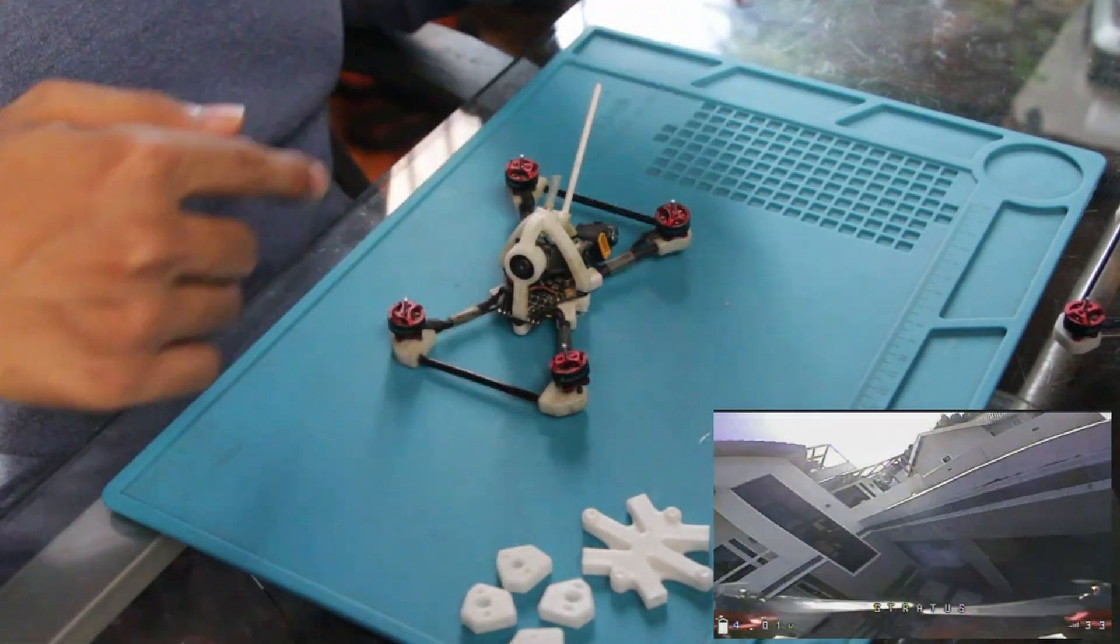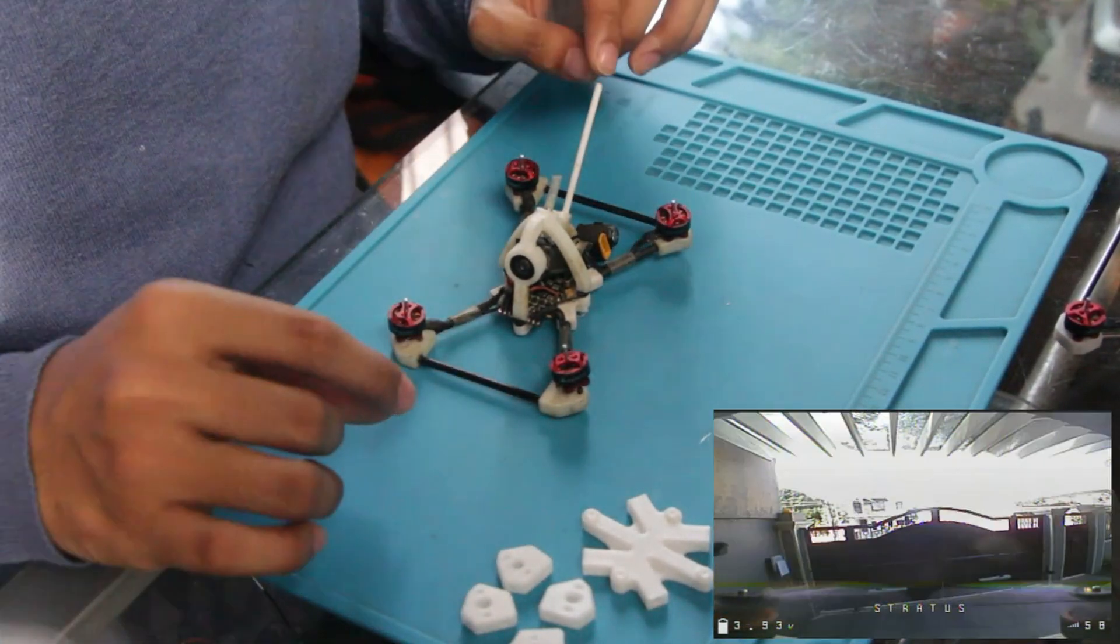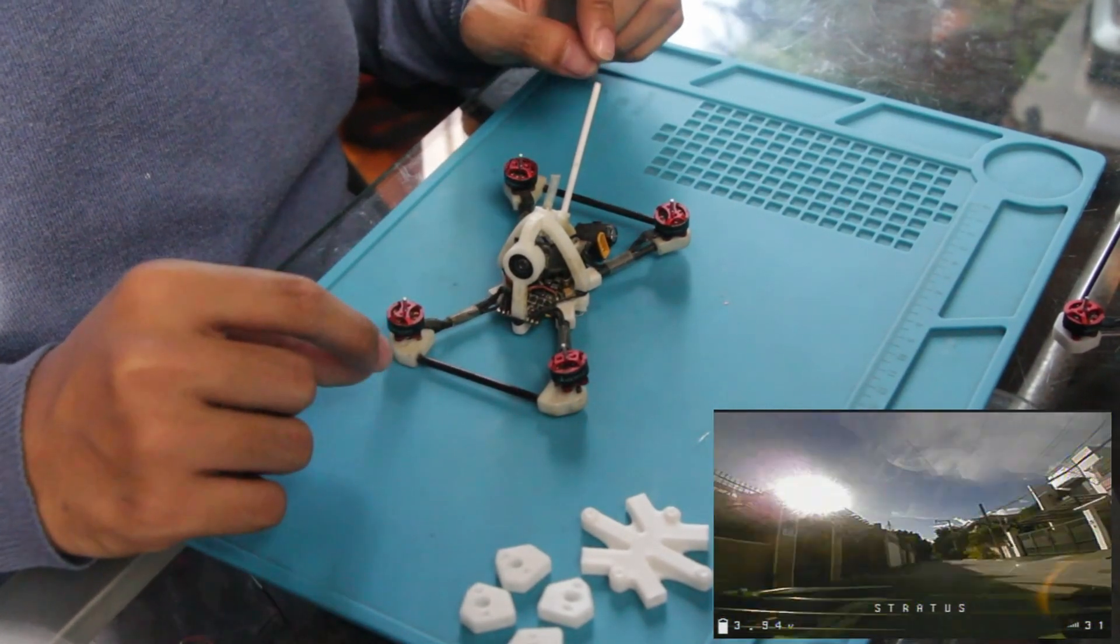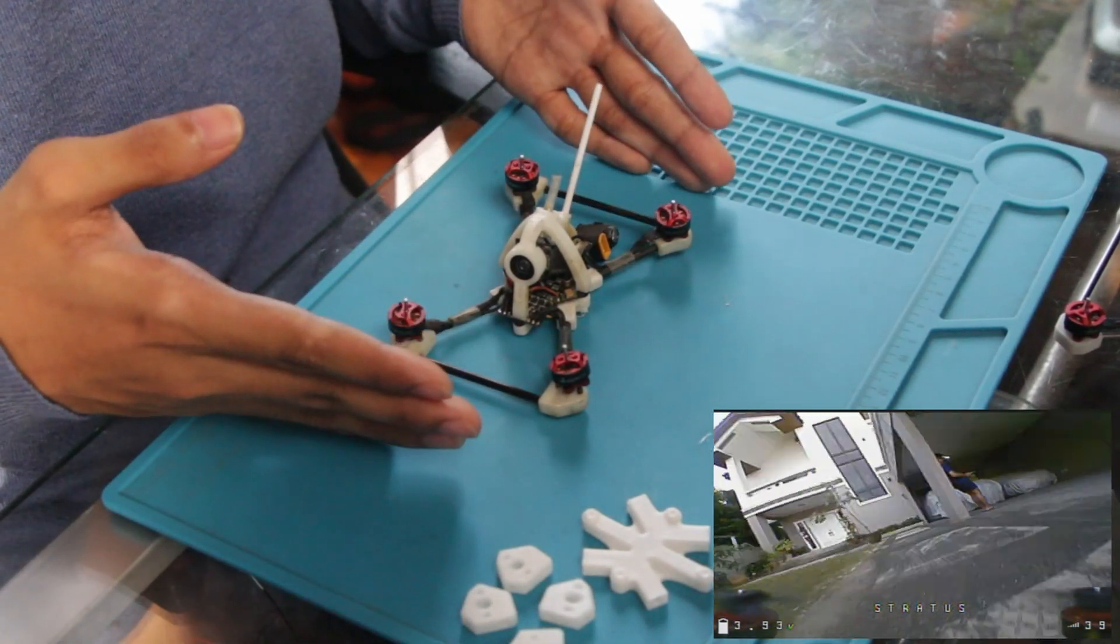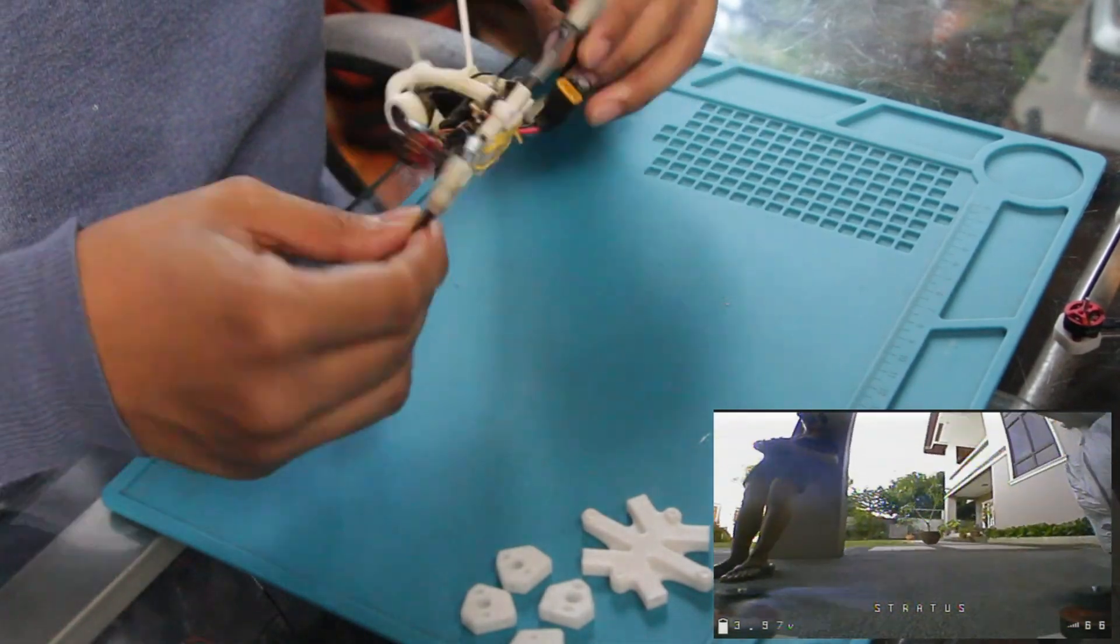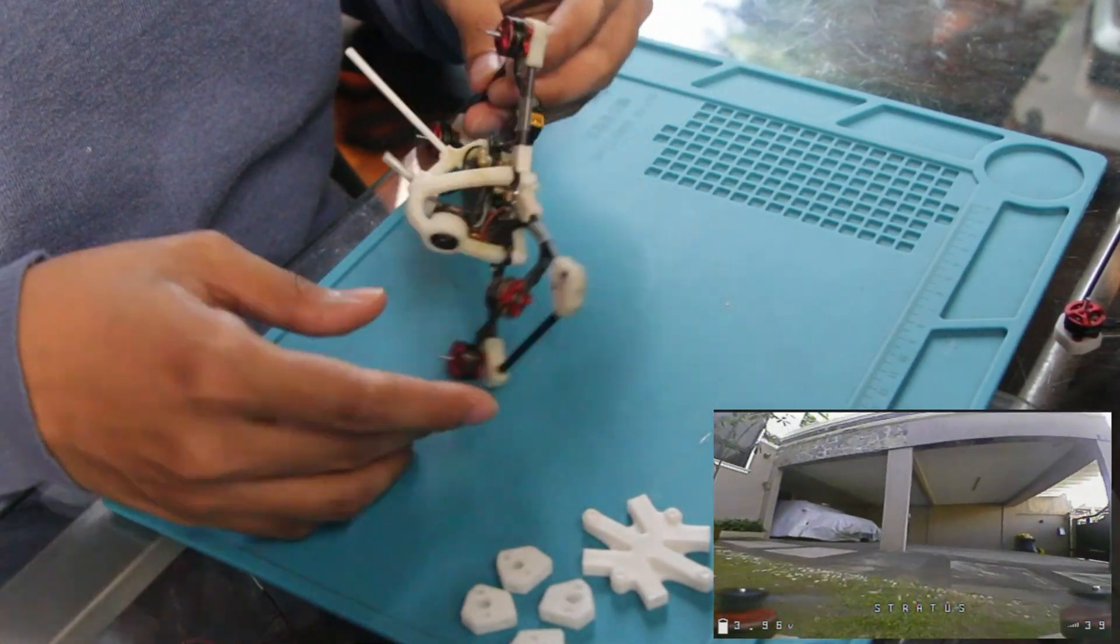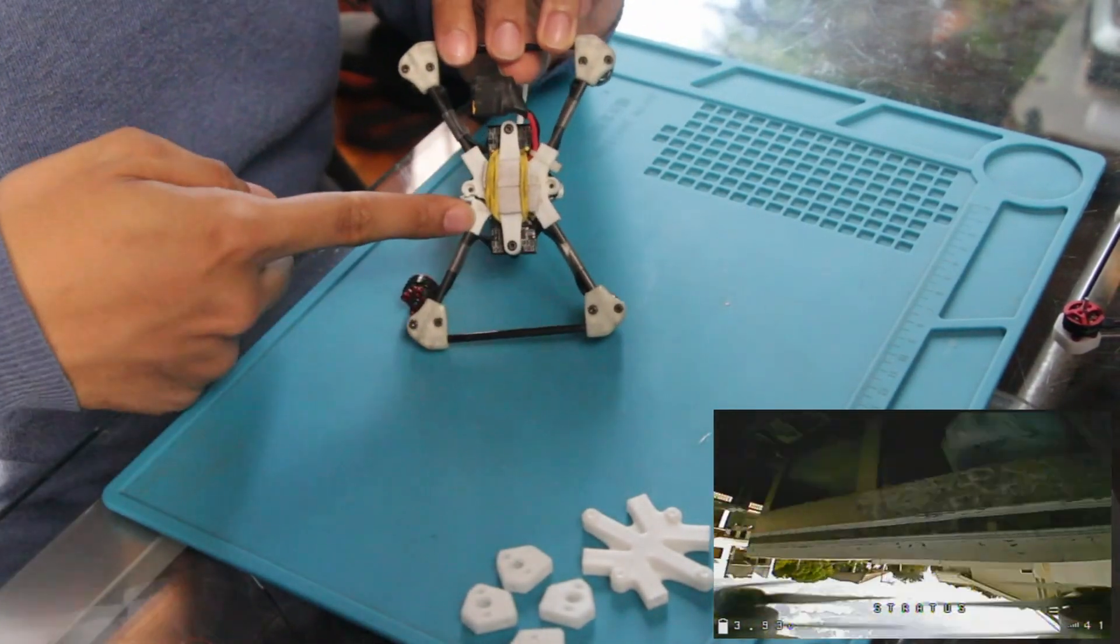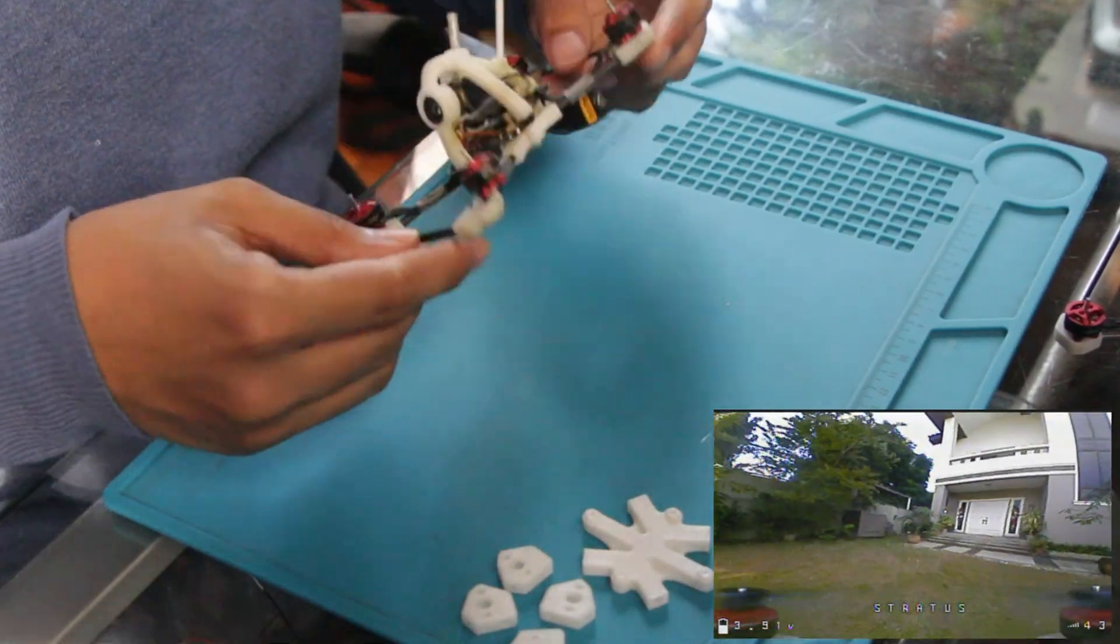This whole quad right now is not glued together whatsoever and I've flown this again 50 plus flights and it has not broken in a way that it's unrepairable. All of the carbon fiber rods are actually still intact, nothing is broken, everything is still pretty solid. That middle part is the only thing that broke. These arm ends can still be used.